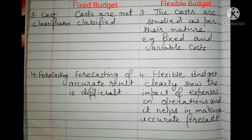The third point is cost classification. Under fixed budget, costs are not classified. Whereas under flexible budget, the costs are studied as per their nature. In flexible budgets, we classify fixed and variable costs accordingly — if a cost is fixed, we treat it as fixed; if it is variable, we treat it as variable.